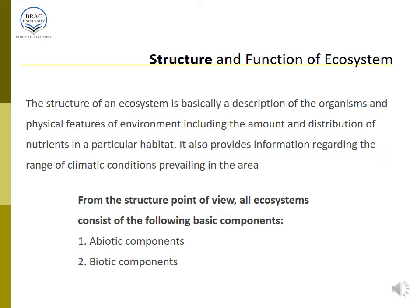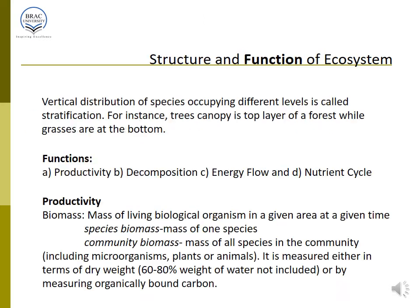From the structural point of view, all ecosystems consist of the following basic components — similar to the environment — biotic components and abiotic components, meaning biological components and physical components. This structure is also vertically distributed, starting from trophic level 1 up to trophic level 4 or sometimes 5. For example, a tree canopy is the top layer and grass is the bottom layer.